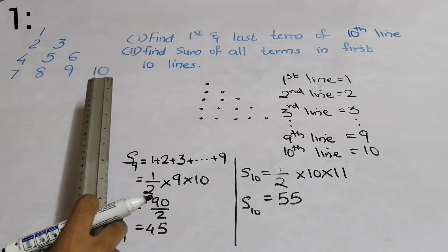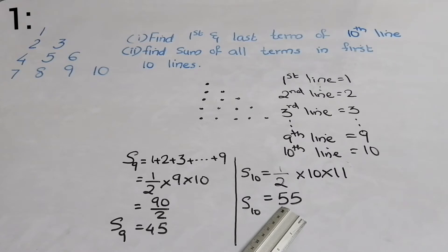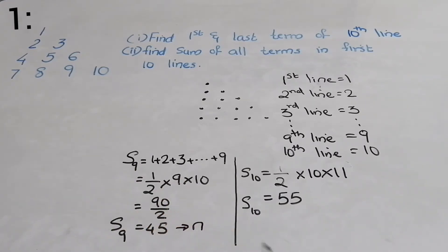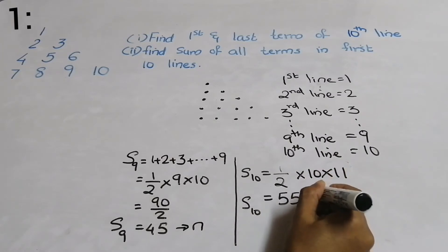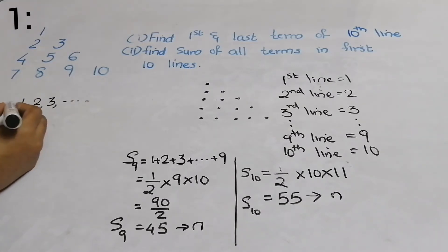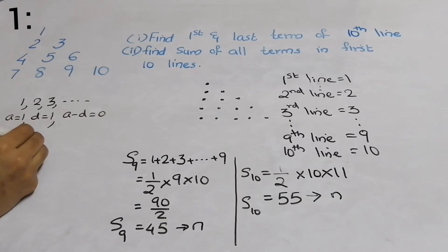So 45 is the position of the last term of the ninth line, and 55 is the position of the last term of the tenth line. This is our n for the ninth line's last position, and this is the last term position for our tenth line. Here the number pattern goes 1, 2, 3, 4... so the first term is 1 and the common difference is 1. Therefore a minus d equals 0.